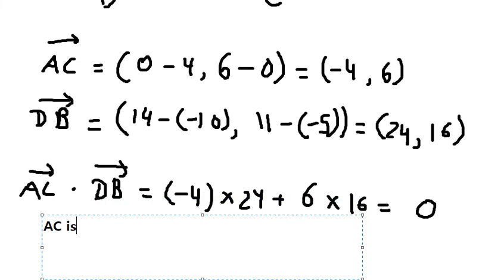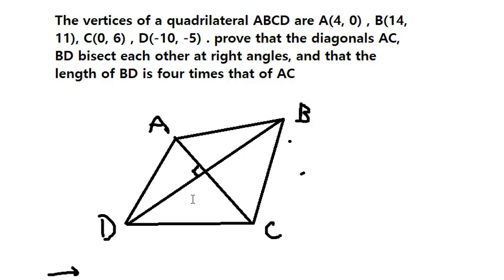That means AC is perpendicular with DB. So that means at the intersection of two diagonals they will have right angles. And we just proved the first question. Now let's go to question number two.